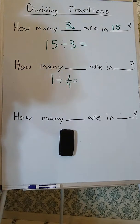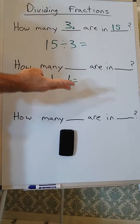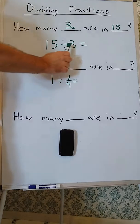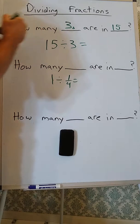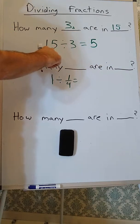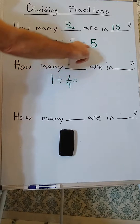Well, let's see, 3, 6, 9, 12, 15, so there are 5 3's in 15. 15 divided by 3 is 5.